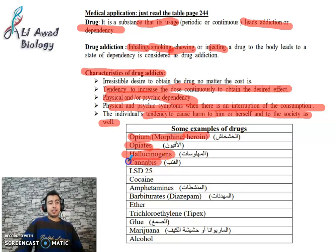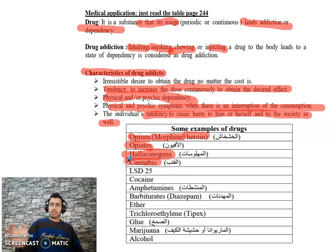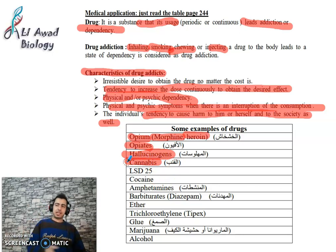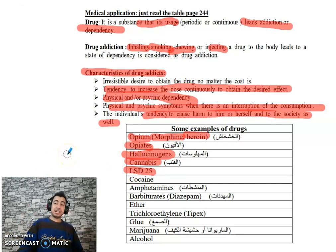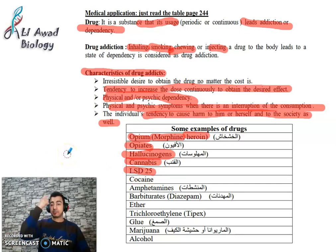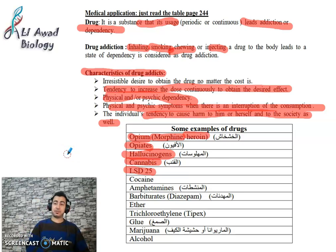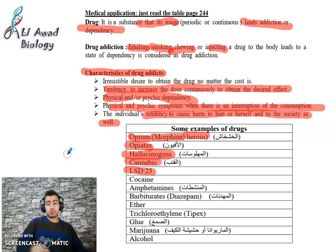Cannabis (القنة) — hashish — exists in India, Yemen, and other places. LSD is a chemically manufactured substance that causes hallucinations, and it is very dangerous because it leads to the degeneration of neurons at the level of the brain — it breaks down and destroys the neural cells in the brain.